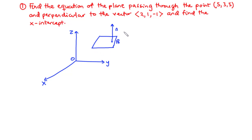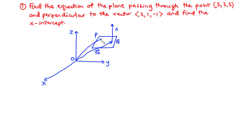We call this vector the normal vector. Assuming that we specify another point — an arbitrary point, say P — on the plane, then we can define two position vectors, R0 and R, which are position vectors of P0 and P. Starting from the origin to P0, we have the position vector R0, and then from the origin to P, we have the position vector R. The vector from P0 to P, let's call that R minus R0.